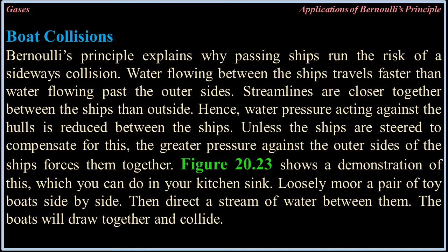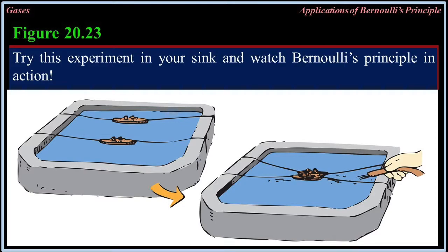Boat collisions: Bernoulli's principle explains why passing ships run the risk of a sideways collision. Water flowing between the ships travels faster than water flowing past the outer sides — streamlines are closer together between the ships than outside. Hence, water pressure acting against the hulls is reduced between the ships. Unless the ships are steered to compensate, the greater pressure against the outer sides forces them together. Figure 20.23 shows a demonstration of this which you can do in your kitchen sink: loosely moor a pair of toy boats side by side, then direct a stream of water between them — the boats will draw together and collide.